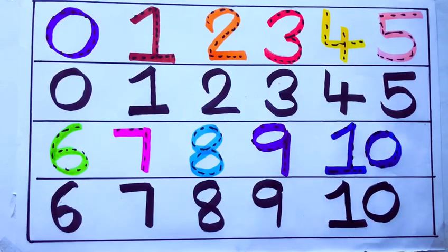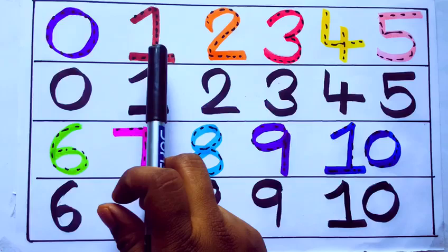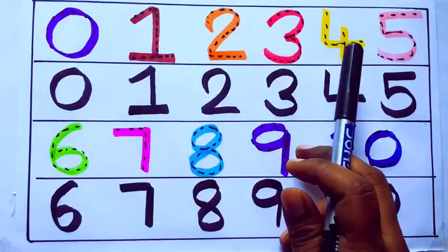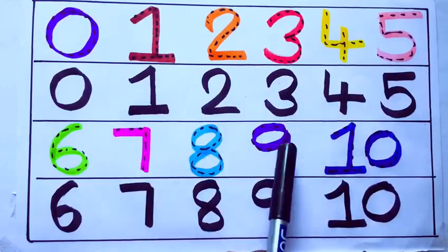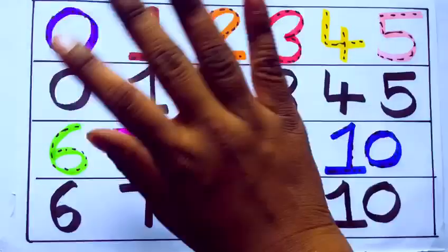Let's recite learning numbers: 0, 1, 2, 3, 4, 5, 6, 7, 8, 9, 10. Bye kids!